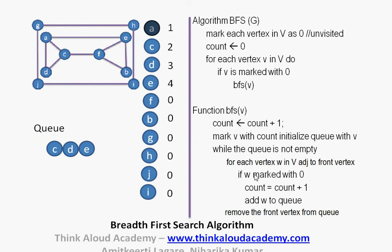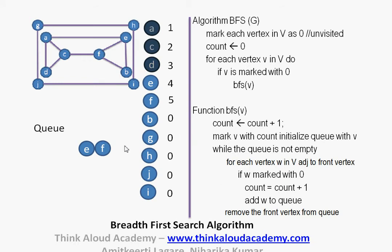Then I go up and check while the queue is not empty — the queue is not empty because there are three elements. So I pick the first element, C, and from C I check each vertex adjacent to C. Adjacent to C are A, D, and F. A and D are already marked as 1 and 3, and F is the only one marked with 0. So I pick F, increment the count to 5, and add F to the queue. Then I go up in the for loop again and check if there is anybody adjacent to C remaining — there is nobody else. So we are done with C; C is removed from the front of the queue. Then we check the queue is not empty because there is D. Adjacent to D are A and C, but they are not marked with 0. Since nobody adjacent to D is marked with 0, I just drop off D.